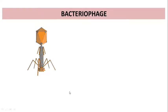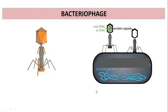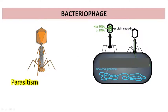Another example is bacteriophage. Certain viruses require a host bacterium for their multiplication process. If they are able to get a host like bacteria, these viruses can replicate very easily. In this relationship, bacteria is the host and the virus is the parasite. This relationship is parasitism — a plus relationship for the virus but a negative relationship for the bacteria, because bacteria is ultimately harmed.